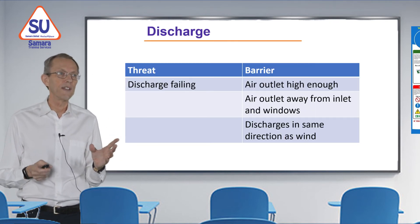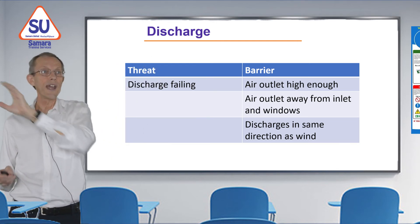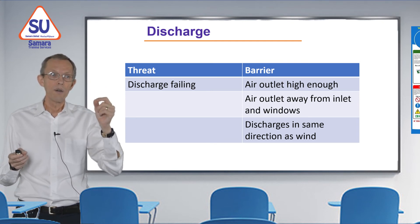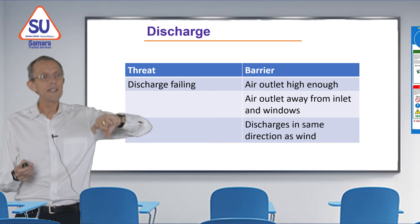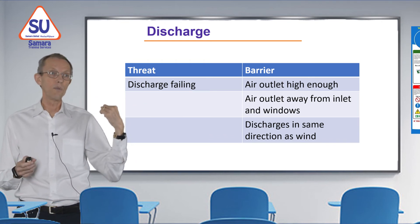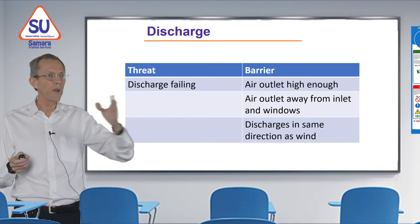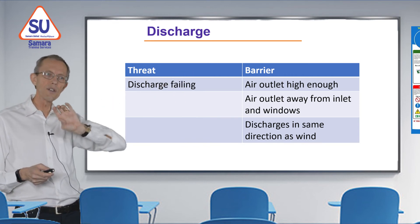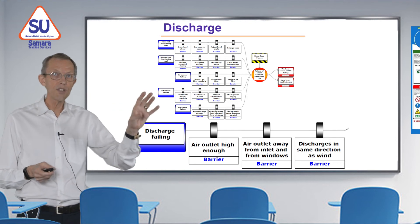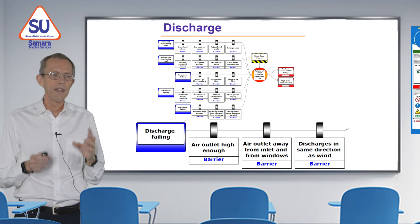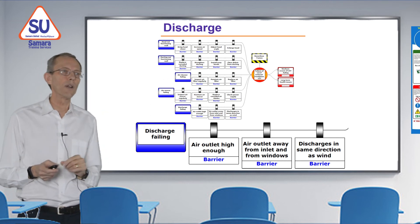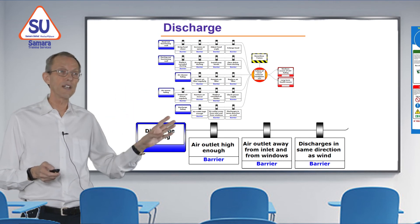The last threat is the discharge failing — where the cleaned air gets blown out. If we don't have it high enough, that air, which still contains some contaminant, will be in an area where people might breathe it. So we need it high enough. We also need to make sure it's away from windows — we don't want to blow exhaust air into a nearby office. And if there's a prevailing wind direction, we want the vent working with the wind to help disperse remaining fumes. On the diagram: discharge fails — move the outlet higher, move it away from windows, and angle it to work with the wind. One side of the bow tie is now complete.